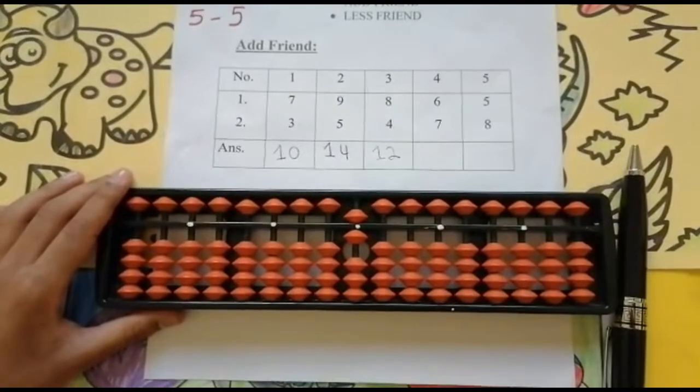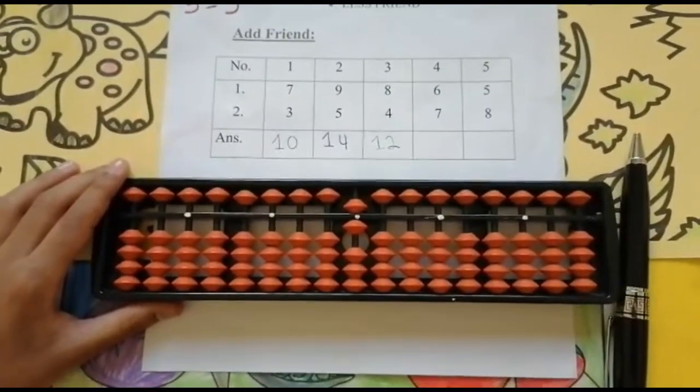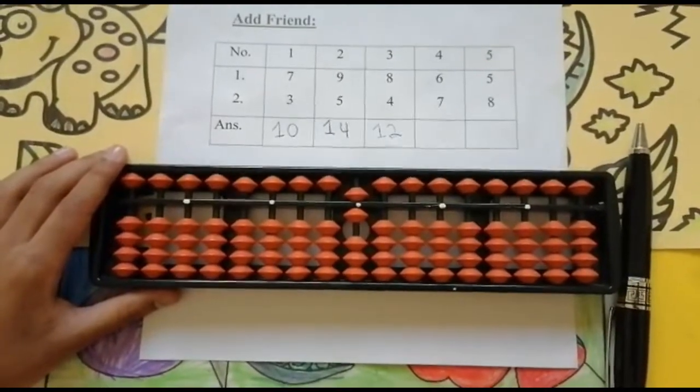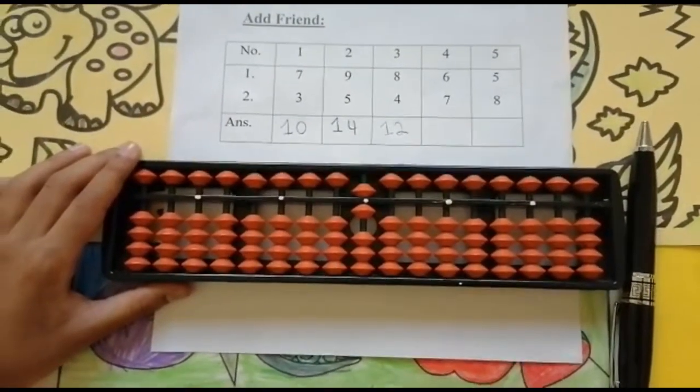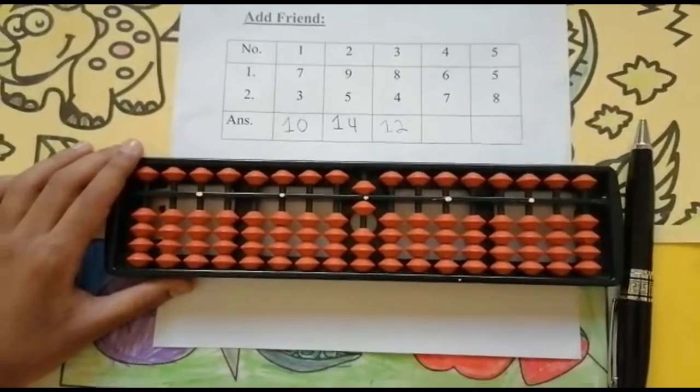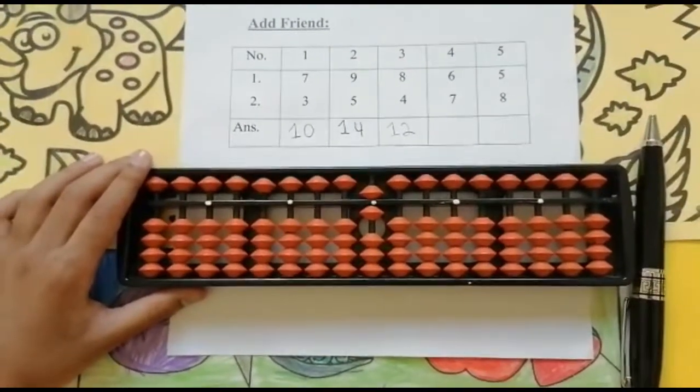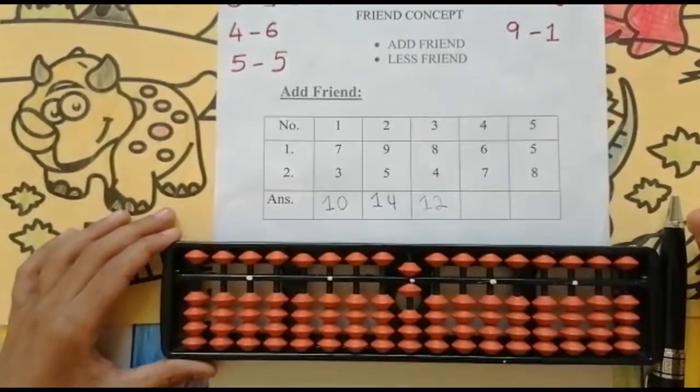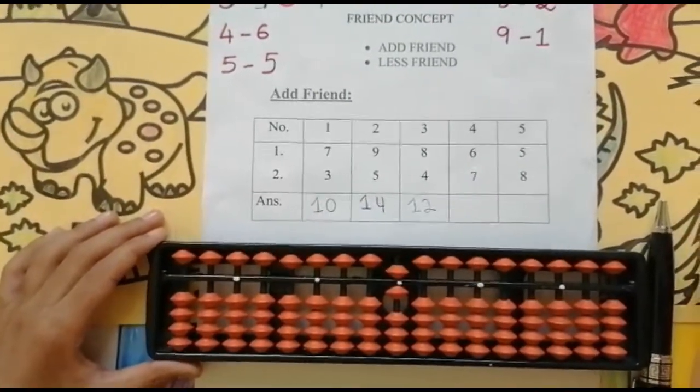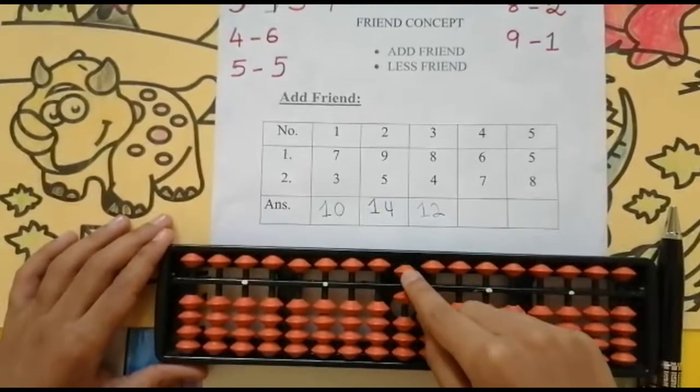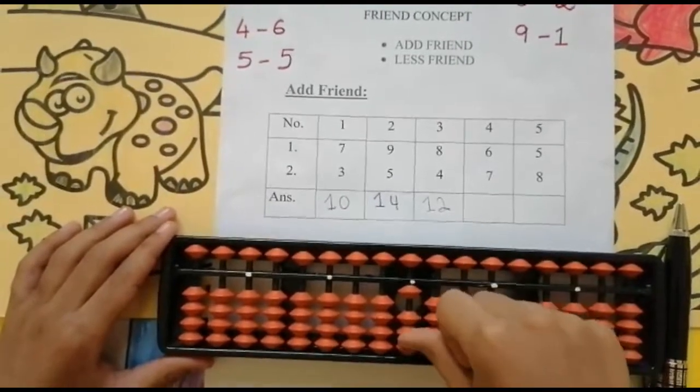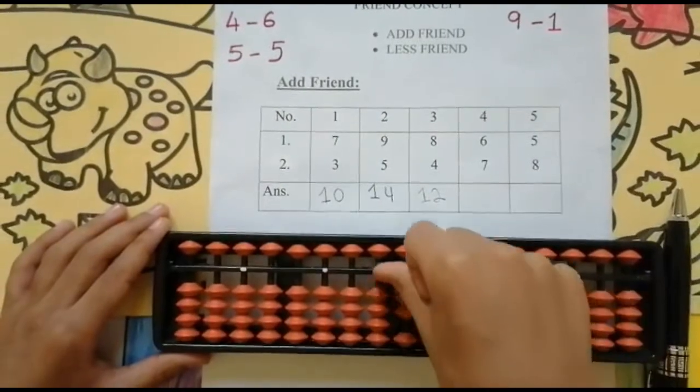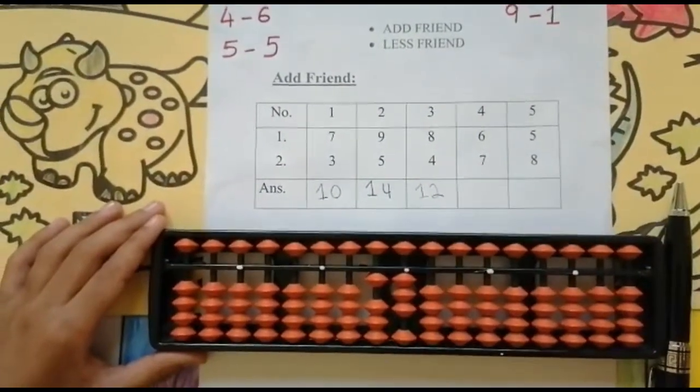So I will get help from the bead which has the value five. This concept is nothing but partner concept. Do you remember guys? If you have any doubt, please check my videos. I have clearly explained about the partner concept. Now let us come to the sum. Partner of three is two. So I will reduce three and then I will add two and I will add ten. Keeping the finger got thirteen.